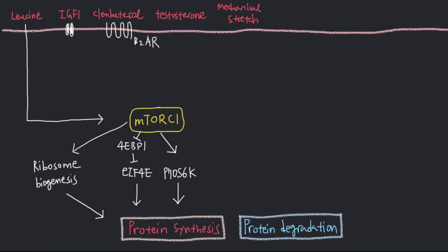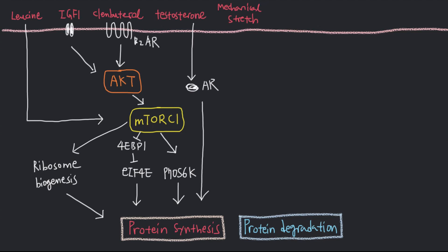IGF1 and clenbuterol, by binding to their receptors, can activate mTOR complex 1 through activation of a protein called AKT, or protein kinase B. Clenbuterol is a drug that is not FDA approved in the US, but is used by many sports athletes to preserve muscle mass while losing fat. Testosterone is a steroid hormone that passes through the lipid bilayer of the plasma membrane and binds to androgen receptors, which can either directly bind to DNA to initiate protein synthesis or indirectly activate the mTOR pathway.